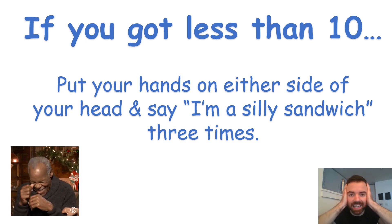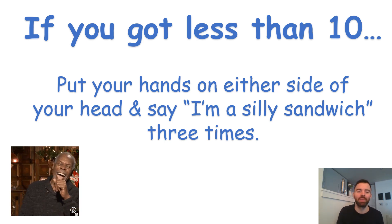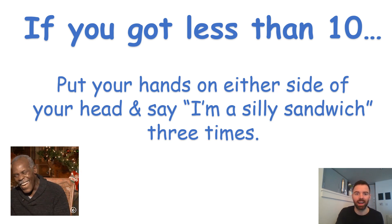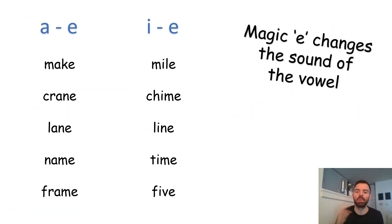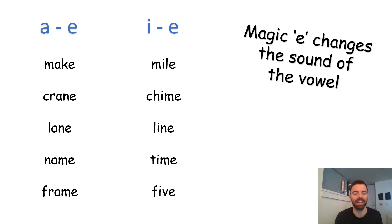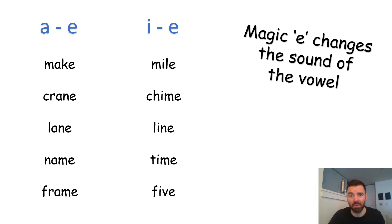I really hope you enjoyed this. It's been lots of fun! I guess we did learn that magic E changes the sound of the vowel. So if you've got an E at the end of words with A, it changes that sound to a capital letter — so it's make, crane, lane, name, and frame. And same with E at the end — it's not mill, chim, lin, tim — it's mile, chime, line, time, and five. Excellent — magic! Thank you very much, and let me know what you thought of this video and if we need to do another one.